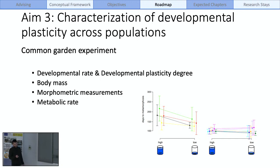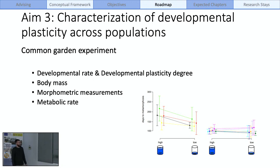With that experiment, we will determine the developmental rate and the developmental plasticity degree. We expect to find differences in the standard developmental rate, as some populations will be considerably faster or will have a longer larval period, and also differences in plasticity — the response to pond drying. We want to correlate this information with the previous results of the bioclimatic analysis. Another part of this experiment will collect data about body mass, morphometric measurements and metabolic rate.